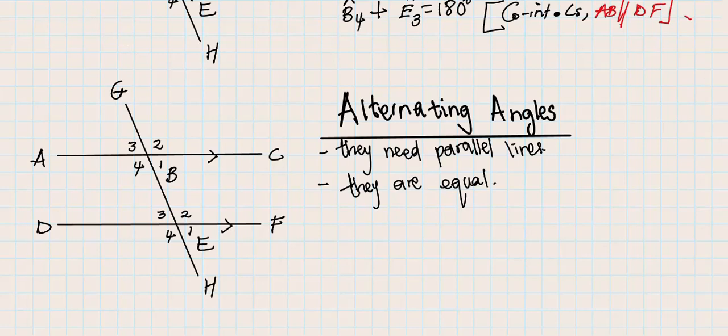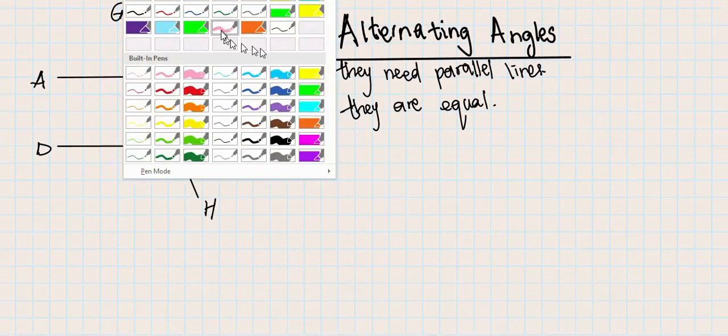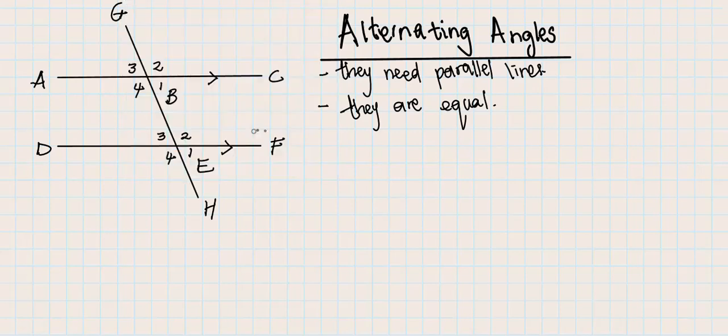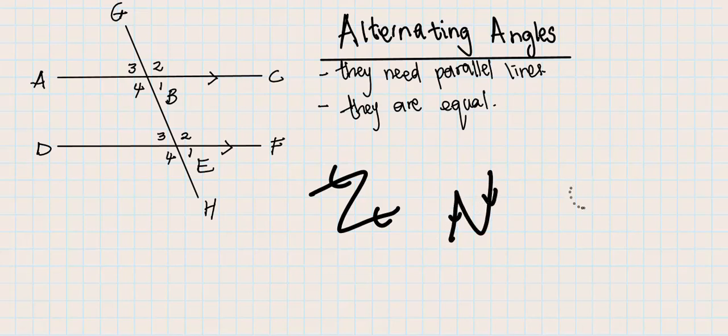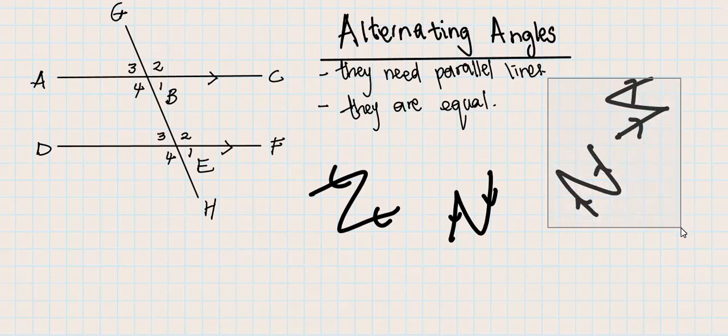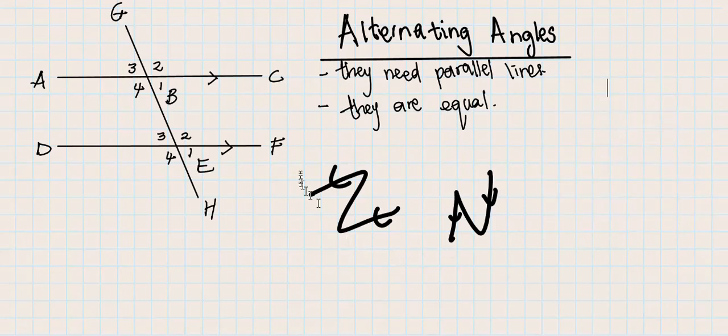For alternating angles, we are looking for a Z shape and these lines must be parallel. Regardless of where the Z is facing, as long as it's a Z, then it's alternating angles. Whenever you see a Z formation, it doesn't matter where the Z is facing - it is an alternating angle.